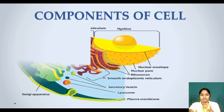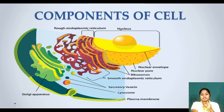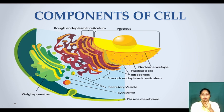Components of cell. Look at this amazing picture — you can see different parts of the cell: rough endoplasmic reticulum, nucleus, nuclear envelope, nuclear pore, ribosome, smooth endoplasmic reticulum, secretory vesicle, lysosome, plasma membrane, and Golgi apparatus. We have studied these different components of the cell before, and today we will discuss them in a lot of detail. Today we will mainly discuss two components: cell membrane and cell wall.